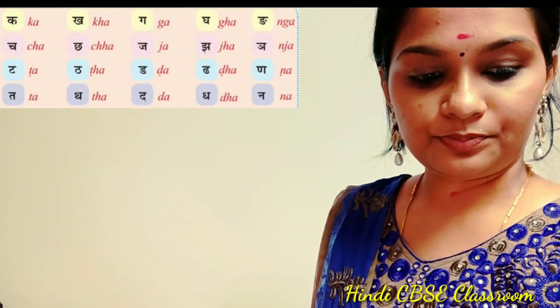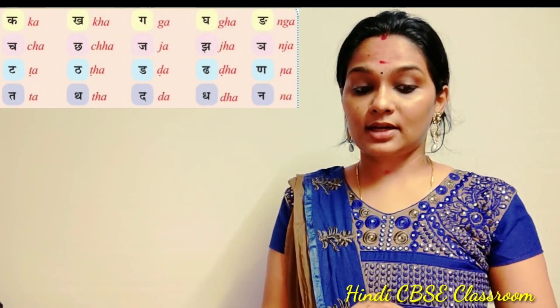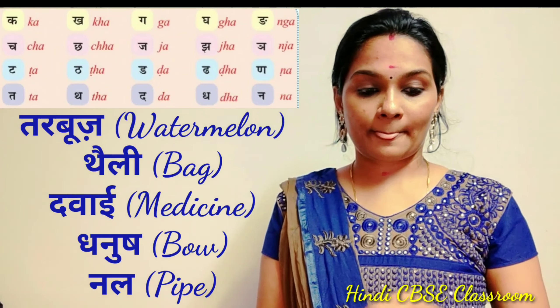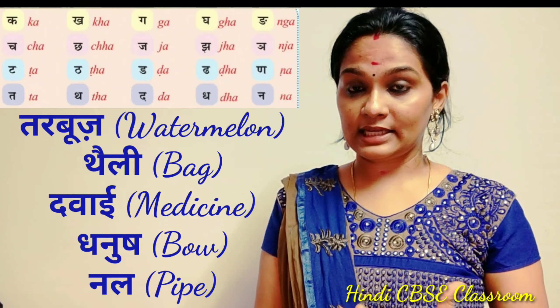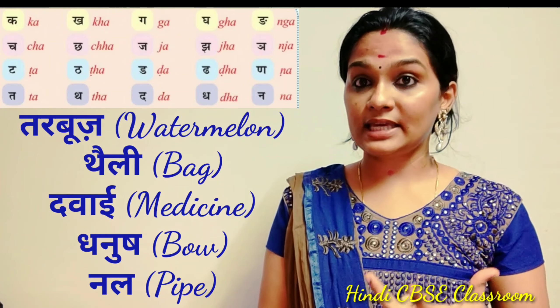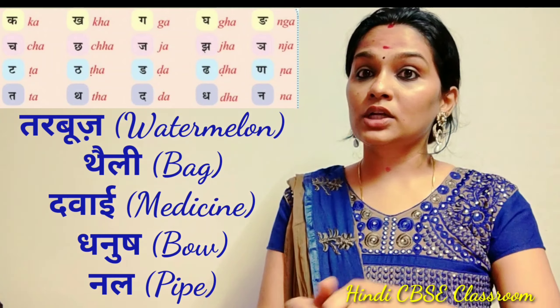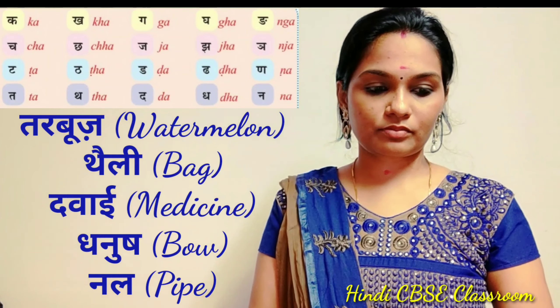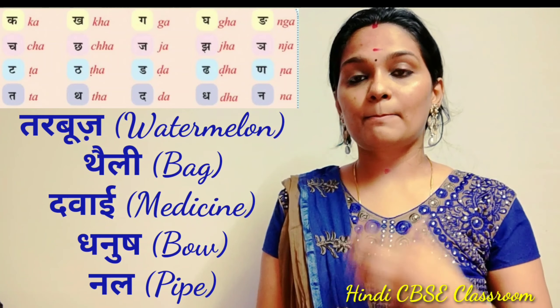Then comes Ta, Tha, Da, Dha, Na. Ta for Tarboos (watermelon), Tha for Thali (plate/bag), Da for Davai (medicine), Dha for Dhanush (bow). Na for Nal (pipe).